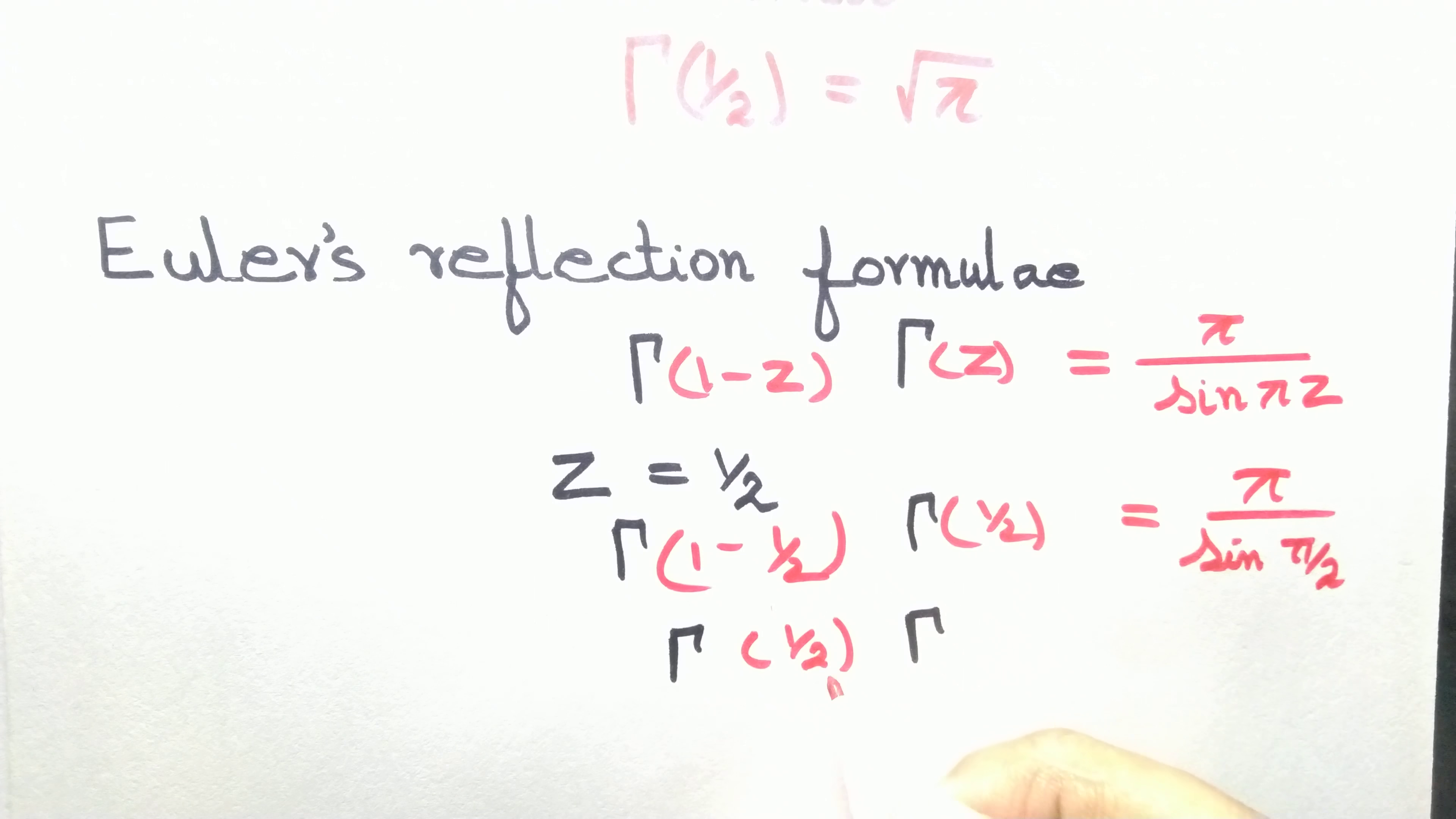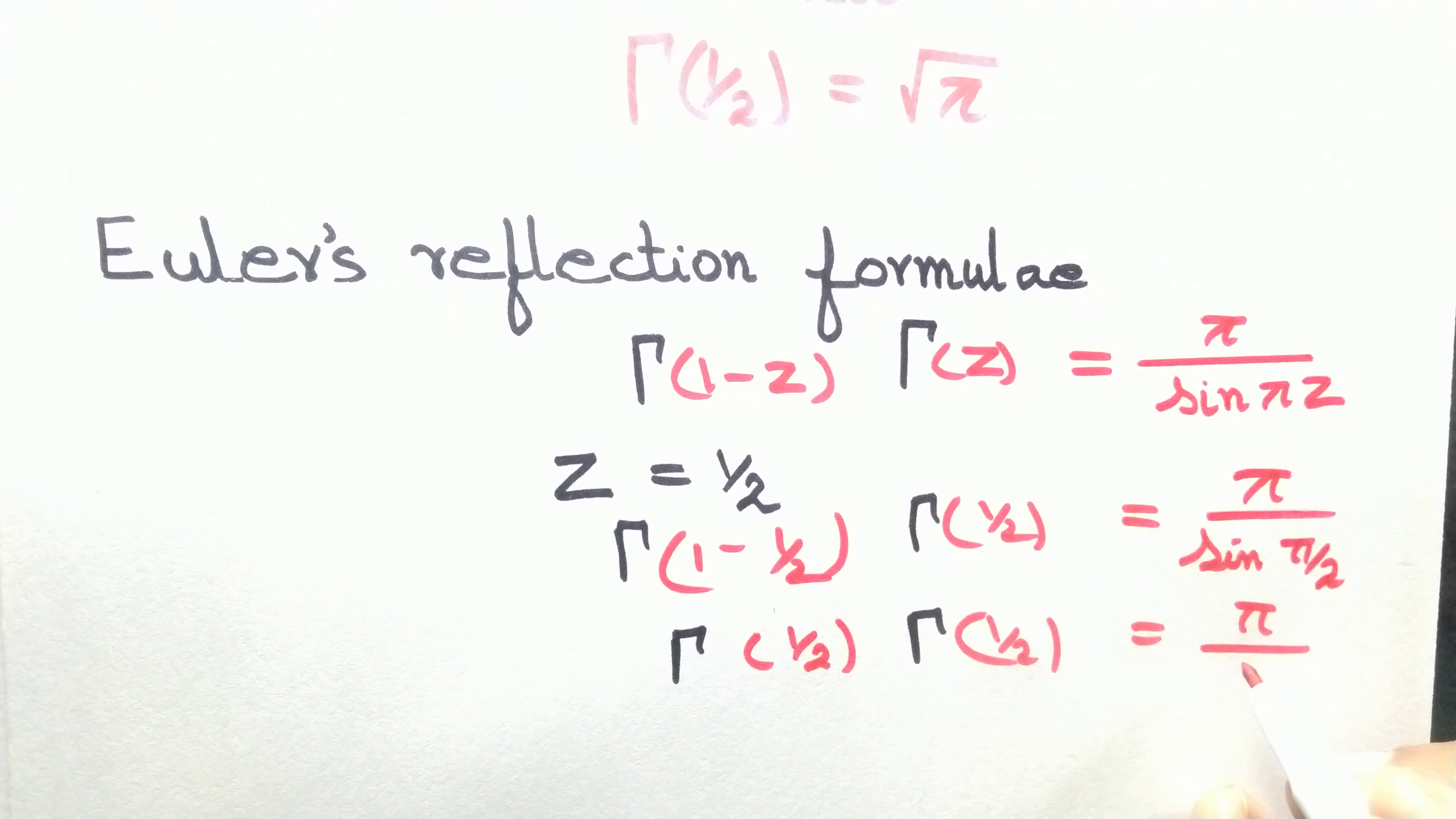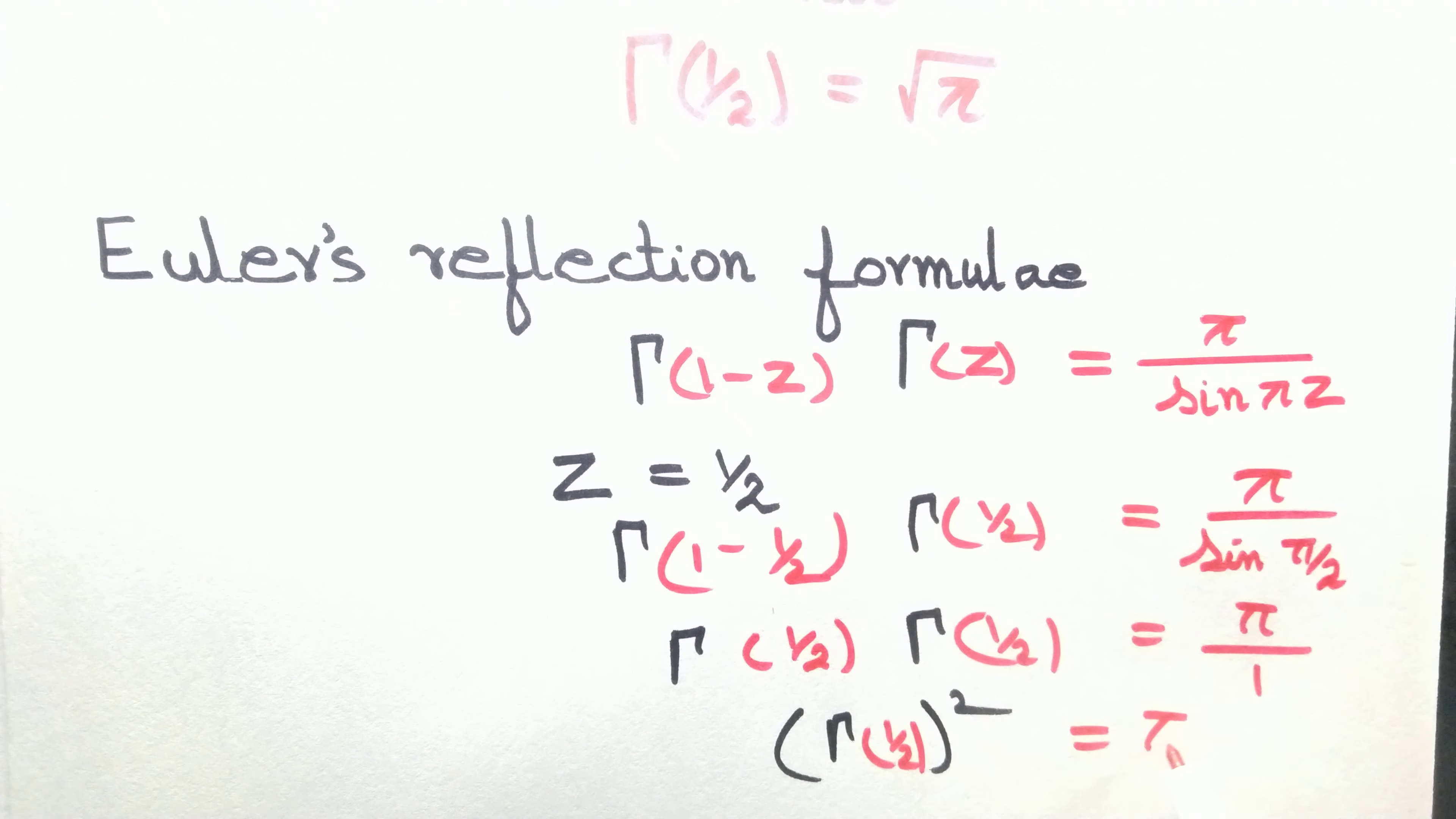Gamma of half times gamma of half equals pi divided by sine 90 degrees, which is 1. So gamma of half squared equals pi.